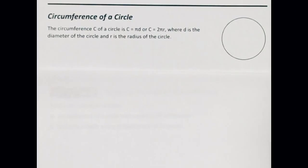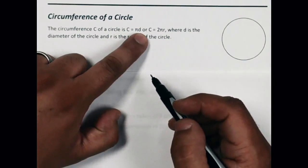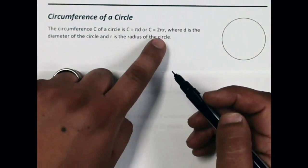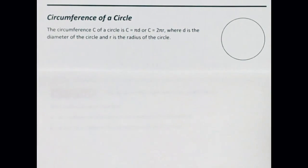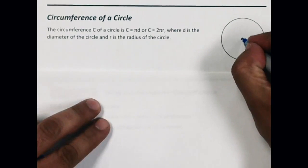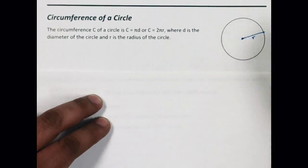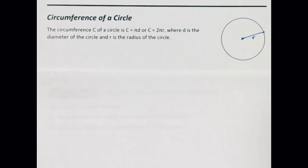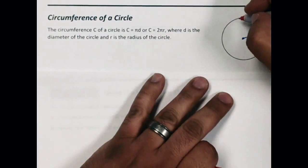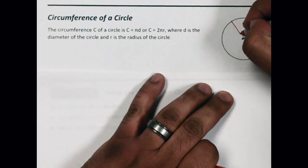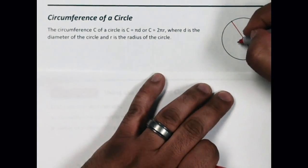We're going to start off with some review. The first thing we're going to talk about is the circumference of a circle. Circumference is equal to pi times the diameter, or circumference is equal to 2 times pi times the radius. The radius goes from the center of the circle to an edge, and the diameter goes from one side of the circle to the opposite side through the center.